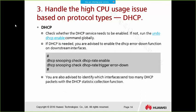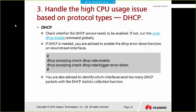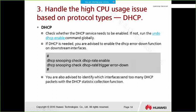If the cause is DHCP, check whether the DHCP service needs to be enabled. If not, disable it using the 'undo DHCP enable' command globally. If DHCP is needed, enable the DHCP error-down function on downstream interfaces using the commands 'DHCP snooping check DHCP rate enable' and 'DHCP snooping check DHCP rate trigger error-down'. When the DHCP rate is too high, this will trigger the interface to shut down.